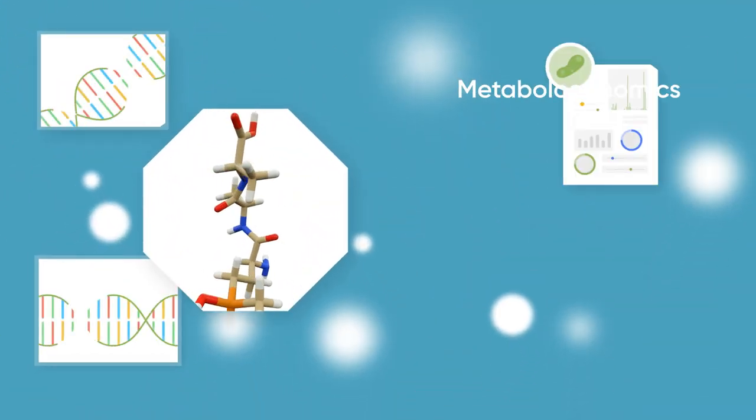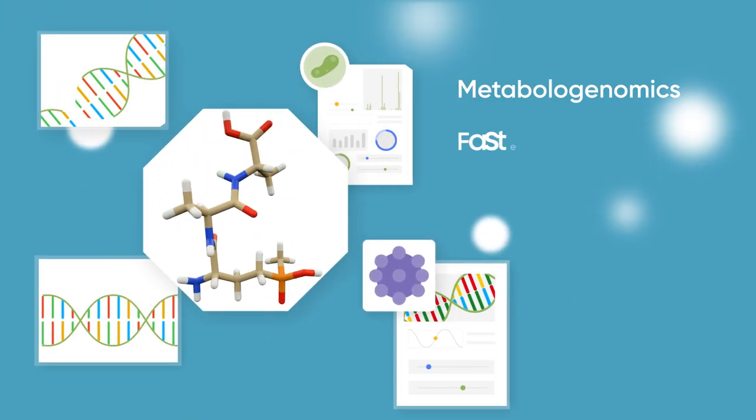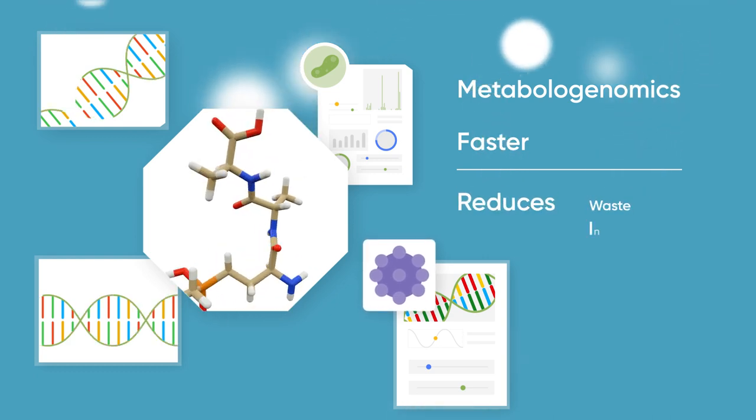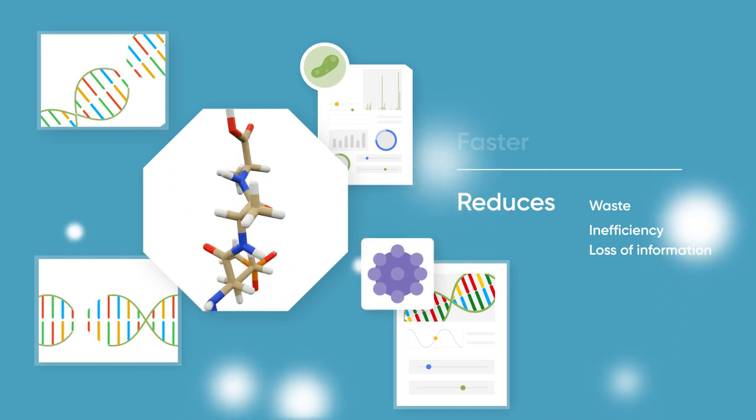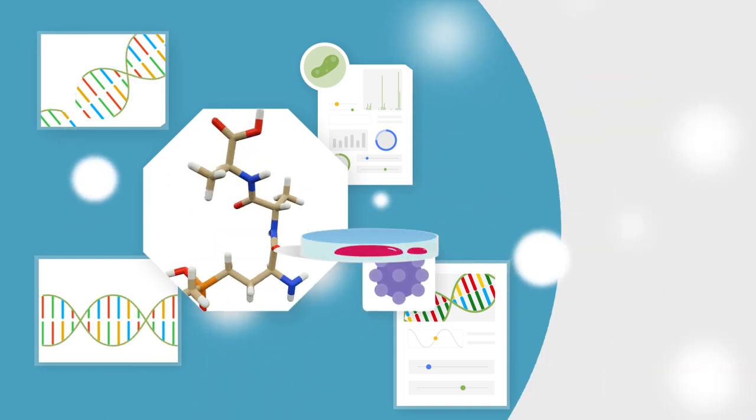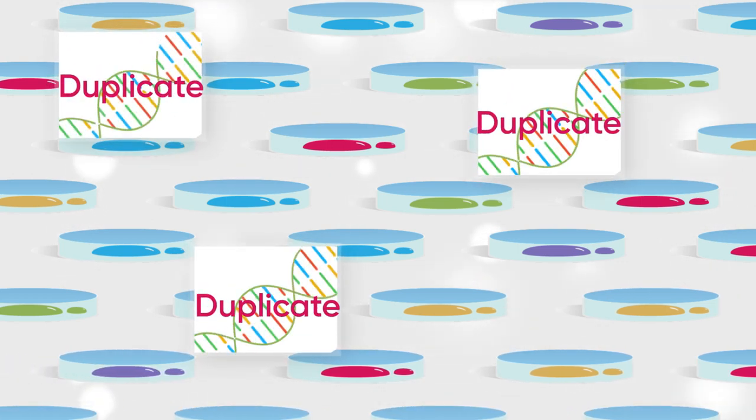Metabologenomics makes the process of finding new natural products much faster and greatly reduces the waste, inefficiency, and loss of information associated with doing things the traditional way. In particular, we avoid rediscovery issues, which plague current labs and burn time and money for many leading organizations.